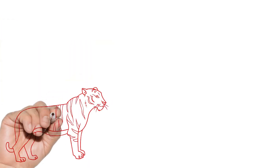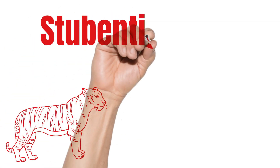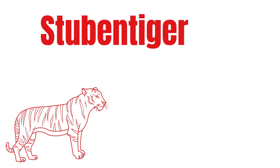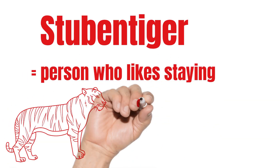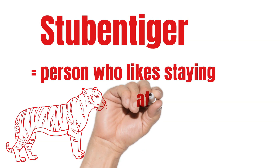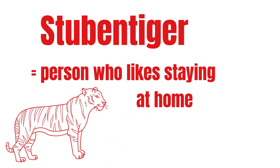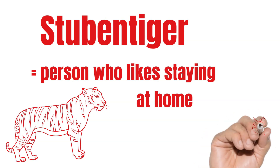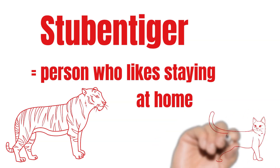Furthermore, Stubentiger is a common word as well, which even has two meanings. First, Stubentiger is a person who loves staying at home — Stube means living room in Austrian German. Second, Stubentiger is another word for cat. Stubentiger.